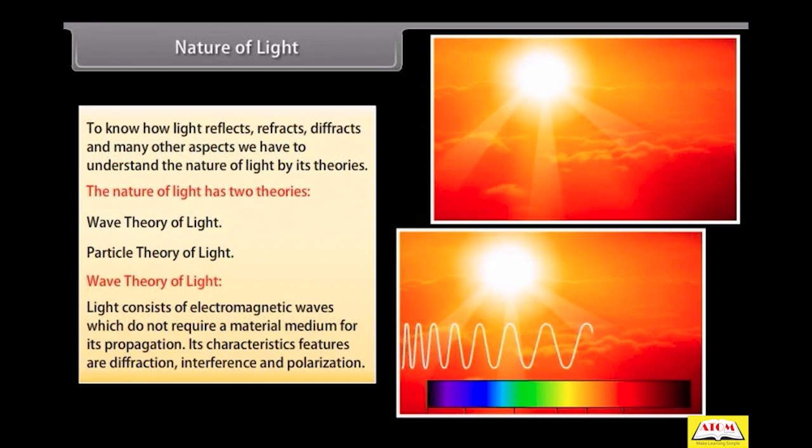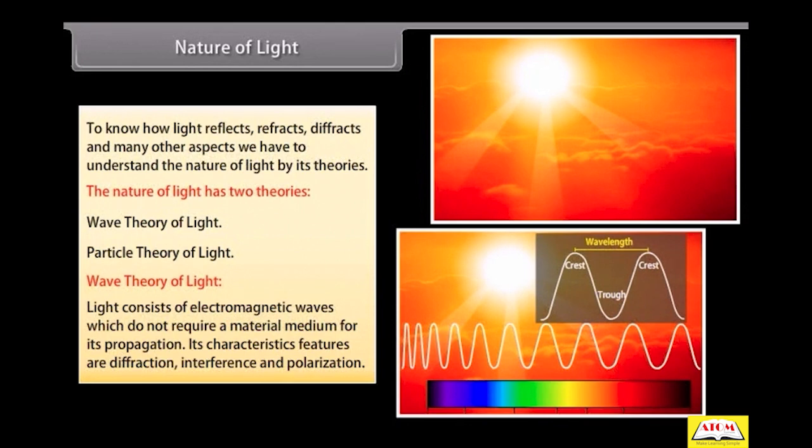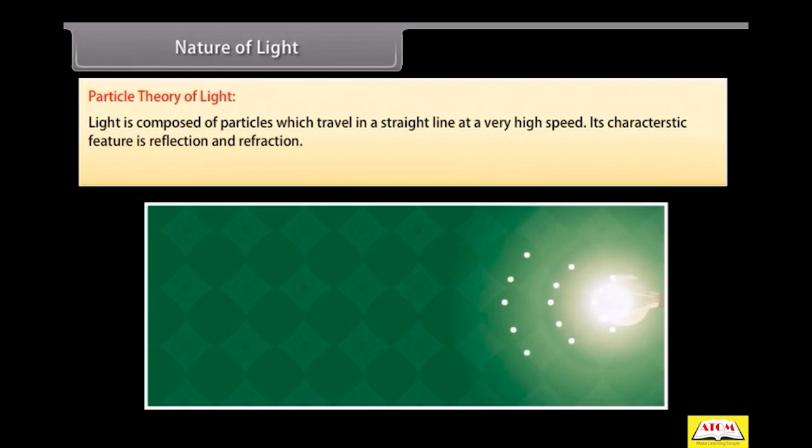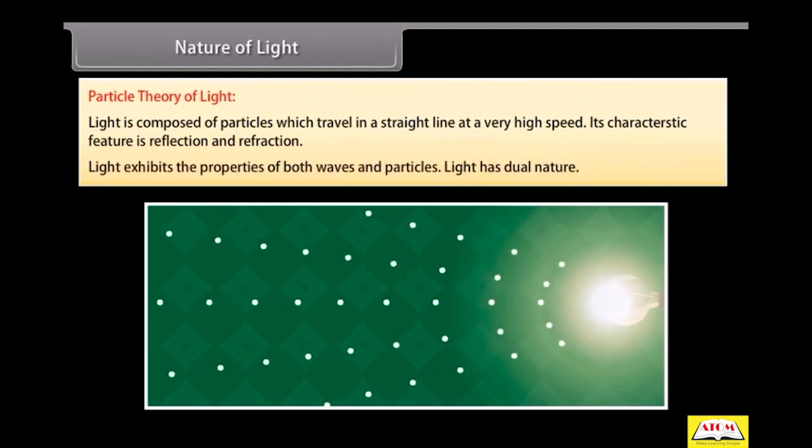Particle theory of light. Light is composed of particles which travel in a straight line at a very high speed. Its characteristic feature is reflection and refraction. Light exhibits the properties of both waves and particles. Light has dual nature.